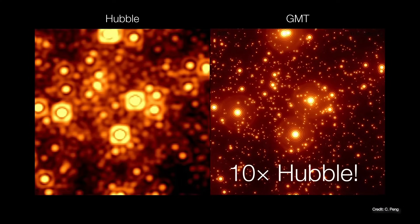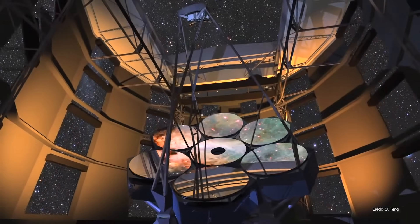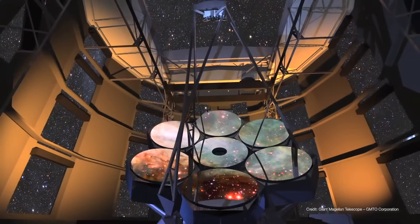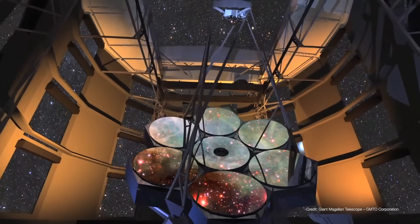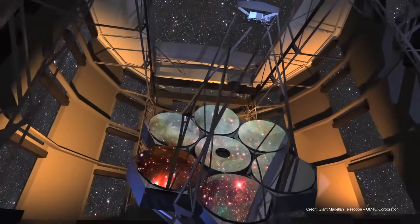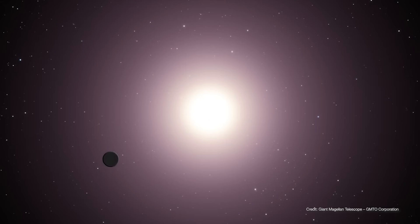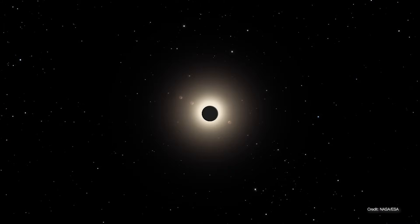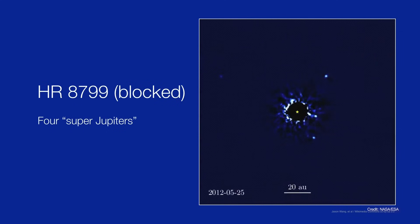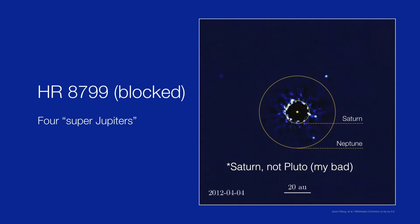With that kind of resolution, GMT will be able to investigate questions that astronomers have been asking for a very long time, not the least of which is, are we alone? GMT will be able to detect planets that are more than one million times fainter than their host stars. We can do this today with our current telescopes, but so far we're limited to planets that are larger than Jupiter orbiting their host stars much farther away than Pluto does from the Sun.